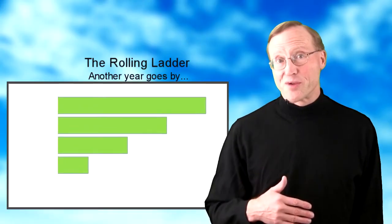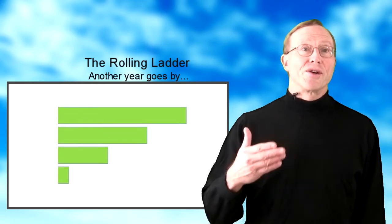If new bonds are purchased as older bonds mature, then you get a recurring or rolling ladder.